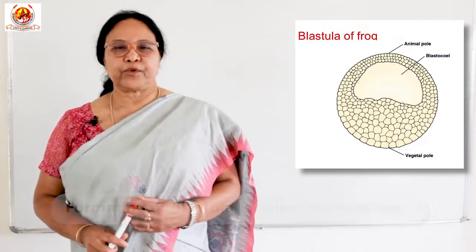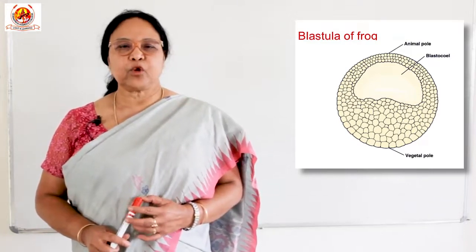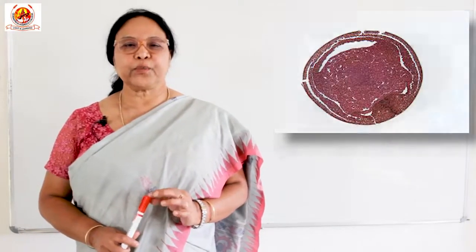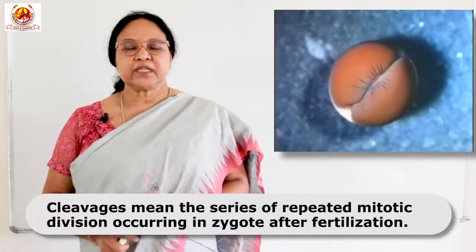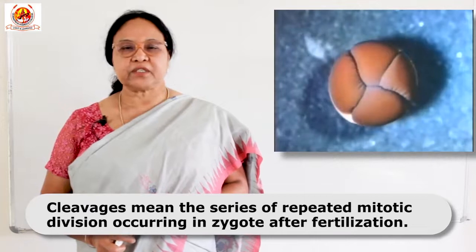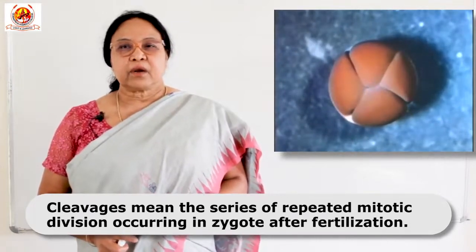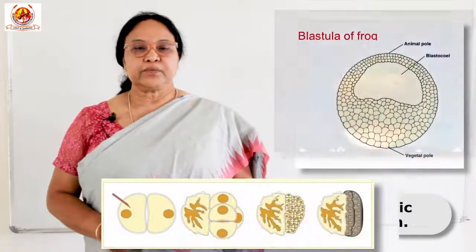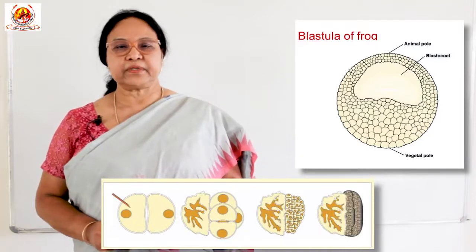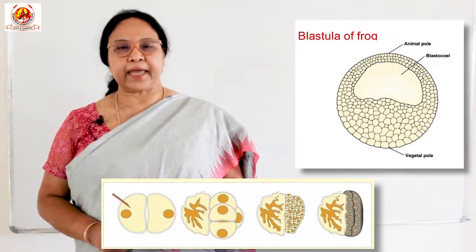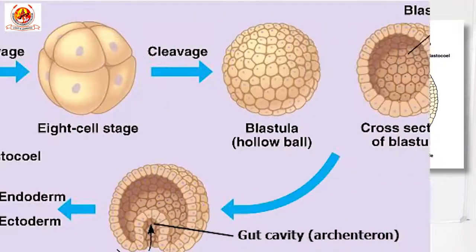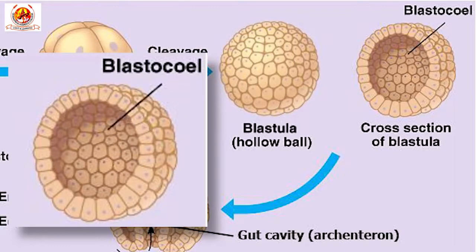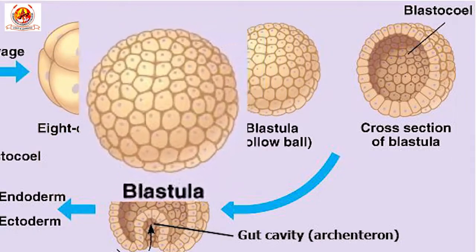As a result of repeated cleavages, a solid ball of blastomeres called Morula is produced. Cleavages means the series of repeated mitotic divisions occurring in zygote after fertilization. Later on, these blastomeres arranged themselves on the periphery of the cleaving egg, leading to the formation of a fluid-filled cavity called Blastocoel.